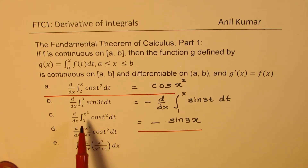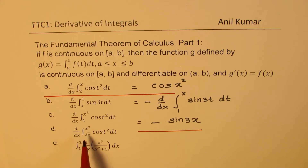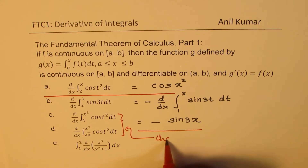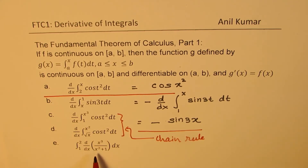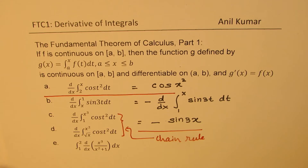In the other two examples, the upper bound is x cubed — a function — and in another, both lower and upper bounds are functions. In these two cases, we'll apply the chain rule by substituting the variable and then solving. The fifth part is slightly different: we'll first have the derivative and then the integral, which is a twist and a very popular test question.